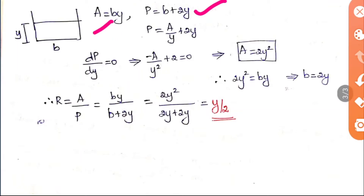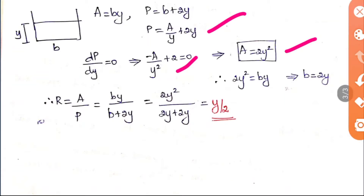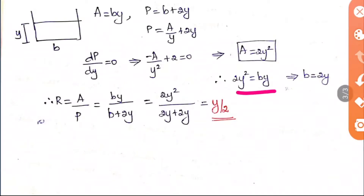The condition is that the wetted perimeter should be minimum. To get the minimum value, we differentiate and set it equal to zero: dp/dy = 0. Converting the b term, p equals a/y plus 2y. Differentiating gives minus a/y² plus 2 equals 0, so a equals 2y².